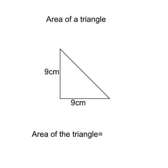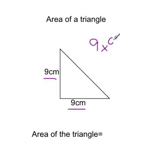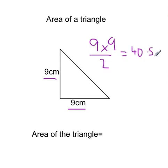I hope you paused the video. So we've got 9cm and 9cm. Using the special formula for area of a triangle, you would know: base times height divided by 2 equals area. So that's 9 times 9 divided by 2, which is 40.5cm squared. If you got that answer, please mark that correct. If not, continue watching the video.